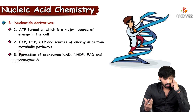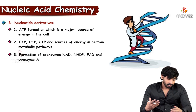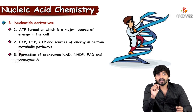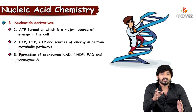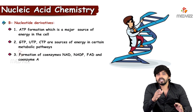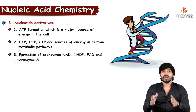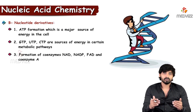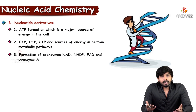Apart from AMP, GMP, and CMP, there are other nucleotide derivatives — ATP also has other functions. From an exam perspective, the biologically important nucleotides have functions beyond just making DNA and RNA, which we will discuss here.